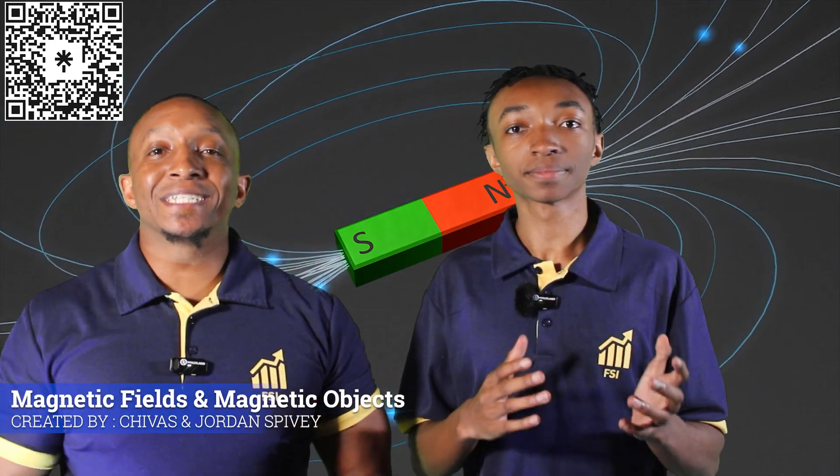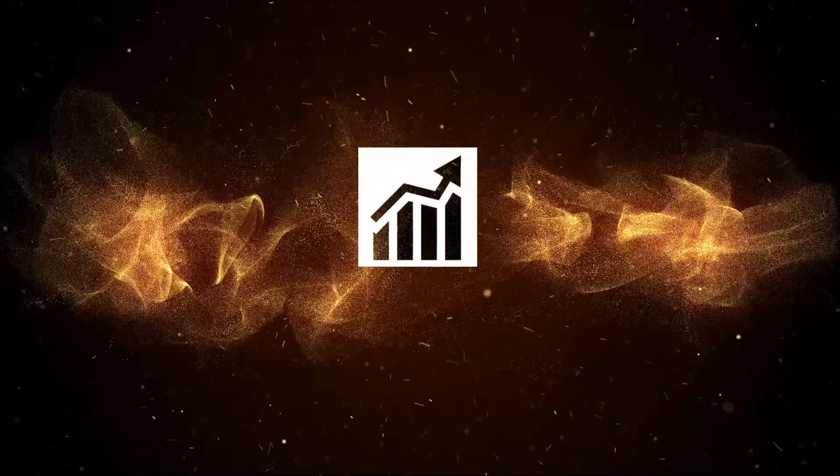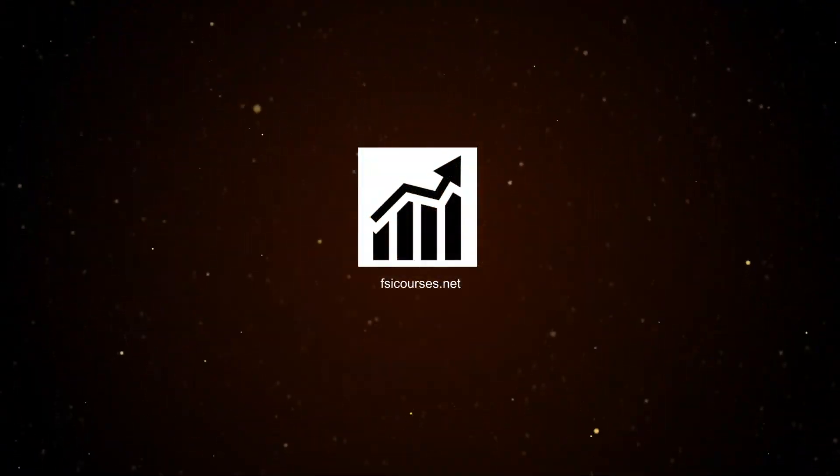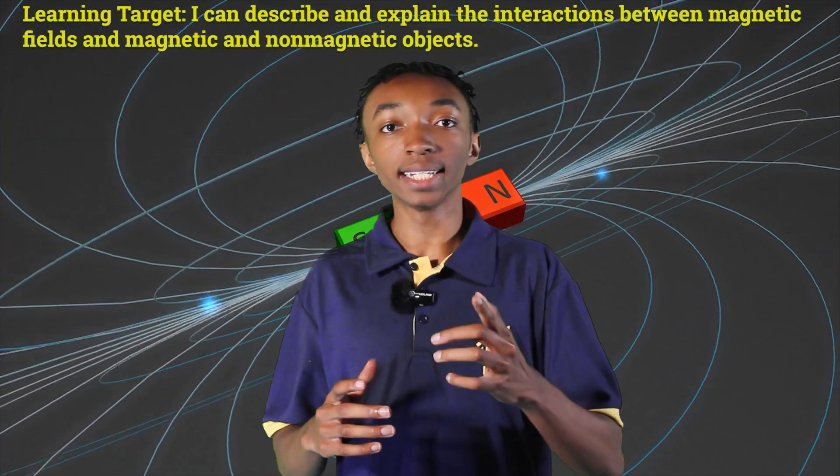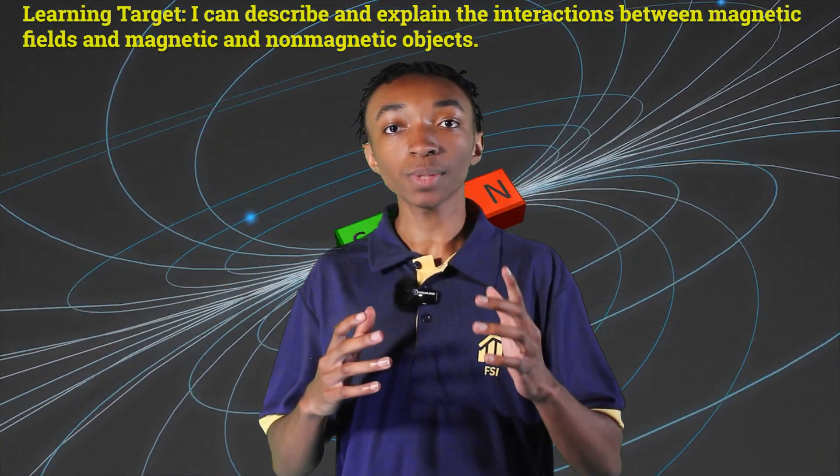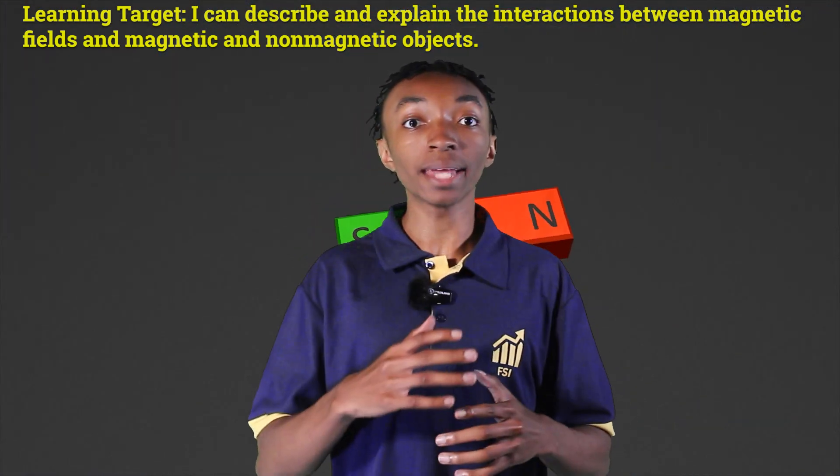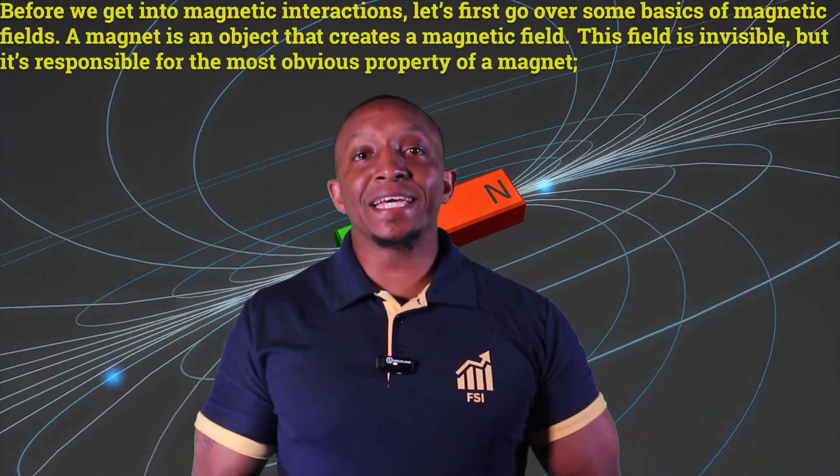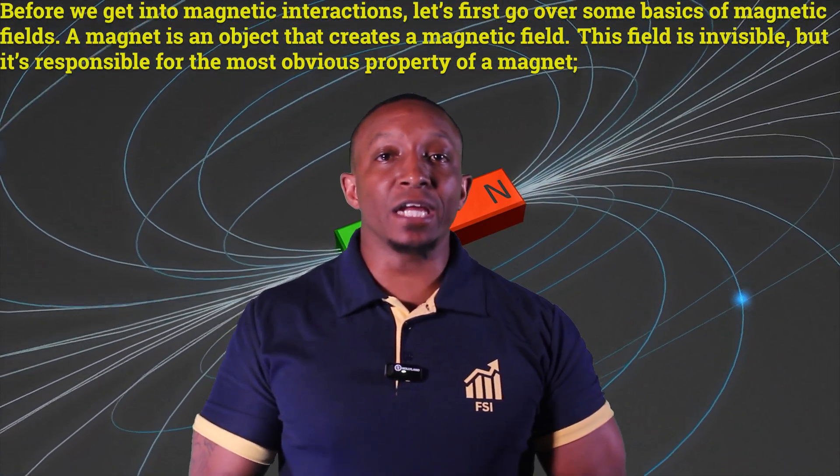In today's video we will describe and explain the interactions between magnetic fields and magnetic and non-magnetic objects, so let's do this. Our learner target for today is I can describe and explain the interactions between magnetic fields and magnetic and non-magnetic objects. Before we get into magnetic interactions, let's first go over some basics of magnetic fields.